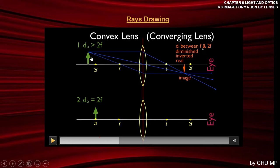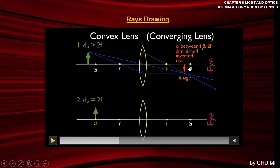So when the object distance is greater than 2F, the characteristics of the image formed are: diminished, inverted, and real. In objective questions, this will be given as answer choices. In structured questions, you'll be asked to draw the ray diagram. Remember: first ray parallel to the principal axis then goes to F; second ray through F then parallel to the principal axis; third ray straight through the optical center. All three rays intersect at one point — that is the image.